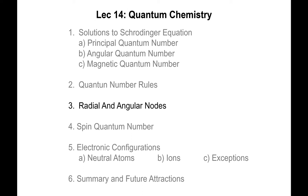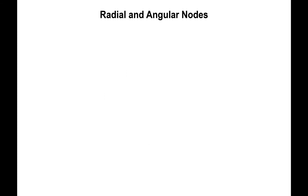Let's talk about radial and angular nodes. The very first orbital an atom has is completely spherical and contains no nodes whatsoever — it's the most stable of all. The total number of nodes present in an atom is given by the energy level in which the electron is located minus one, because the very first orbital contains no angular or radial nodes. The total number of nodes is the combination of radial nodes and angular nodes.